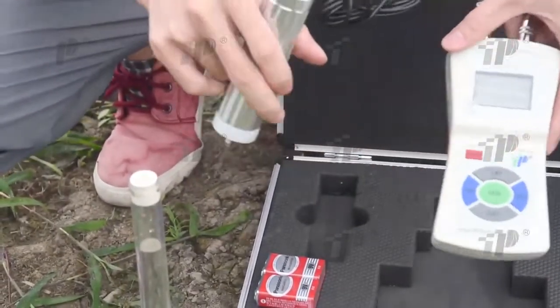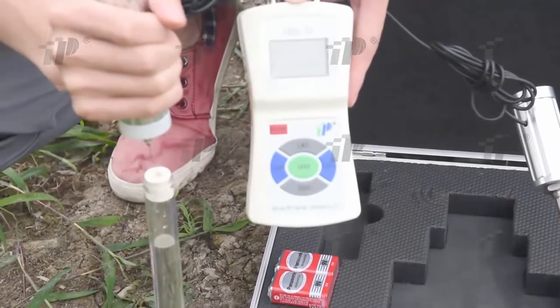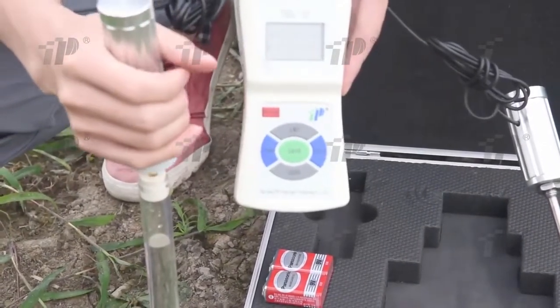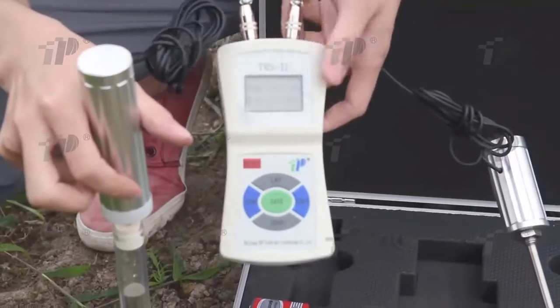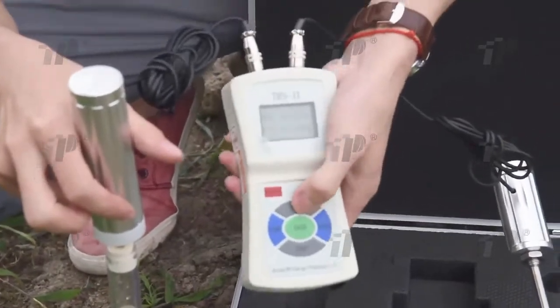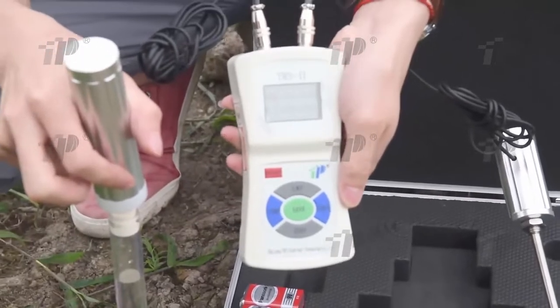After the water potential probe is embedded in moist soil for 1 hour, you can test the soil water potential. During testing, insert the aviation socket of the water potential sensor to the upper left socket of the displayer.